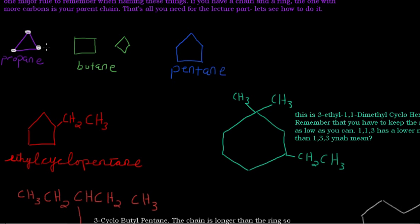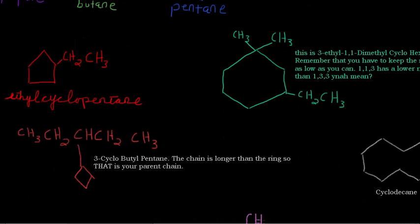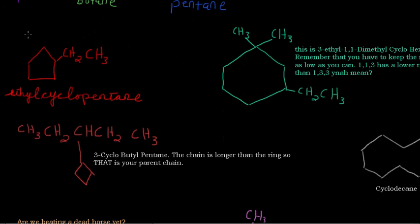So here are a bunch of examples that I drew for you from the problems that I've done. This here is ethyl-cyclopentane. It's a cyclopentane because it's a pentane. You have five carbons, and it's attached to an ethyl group.